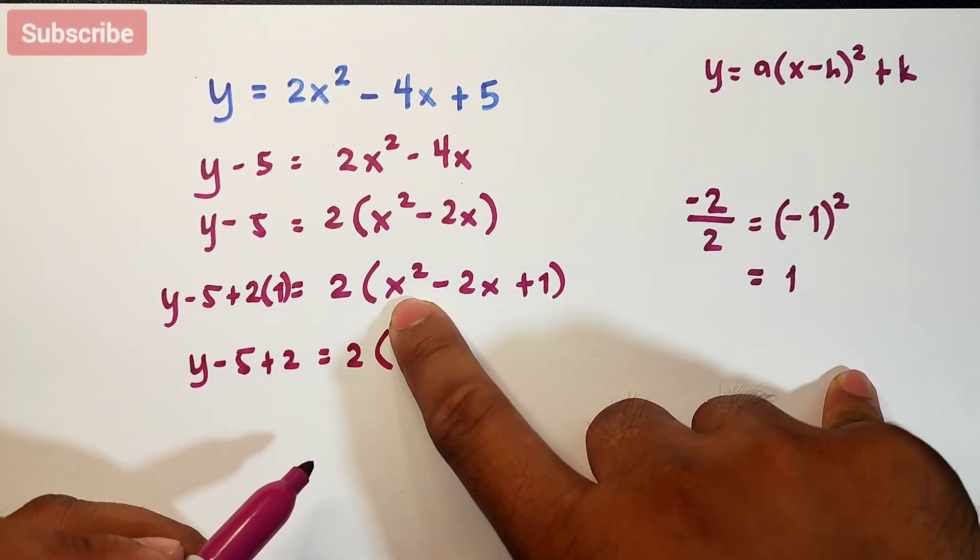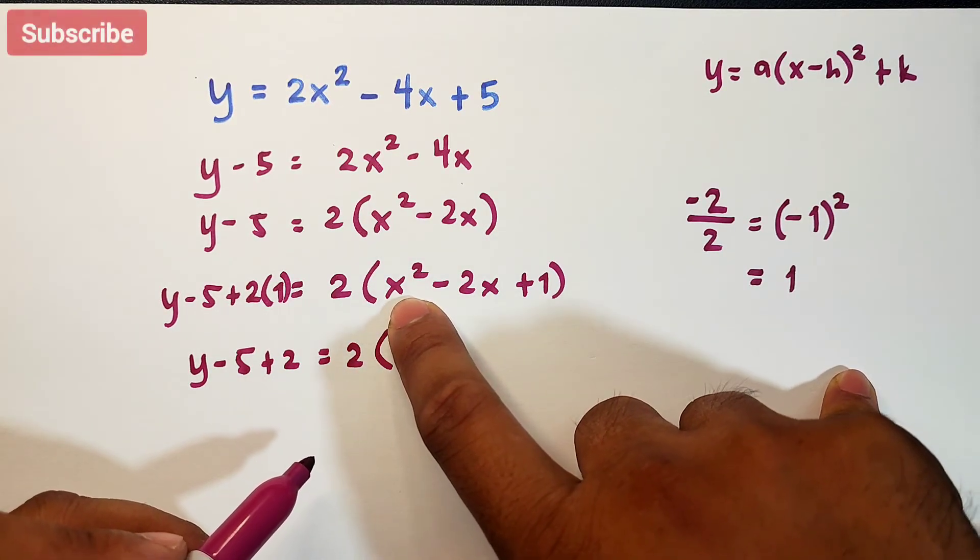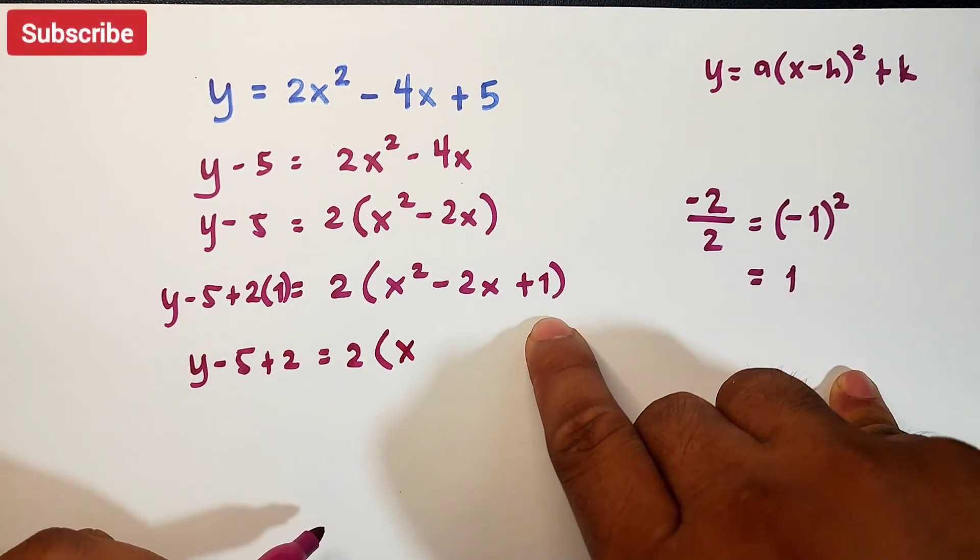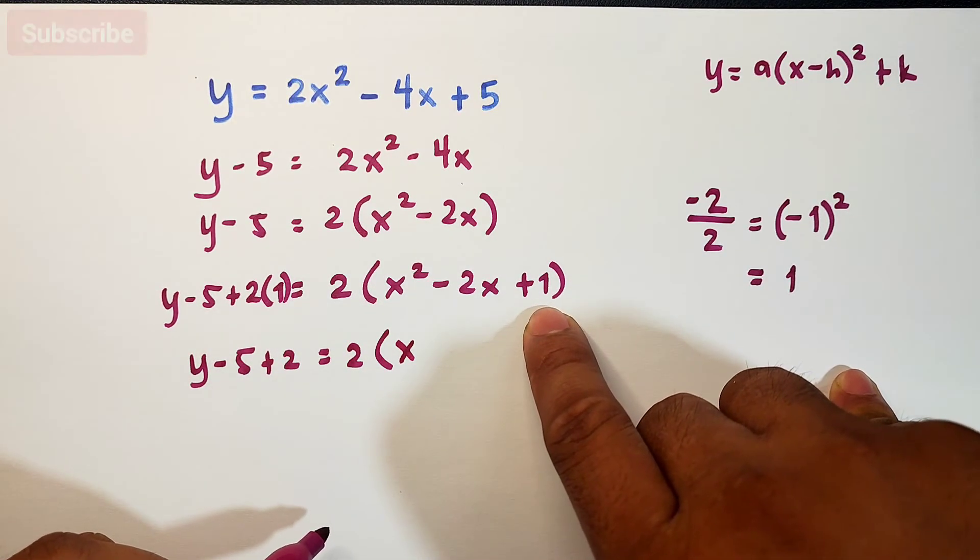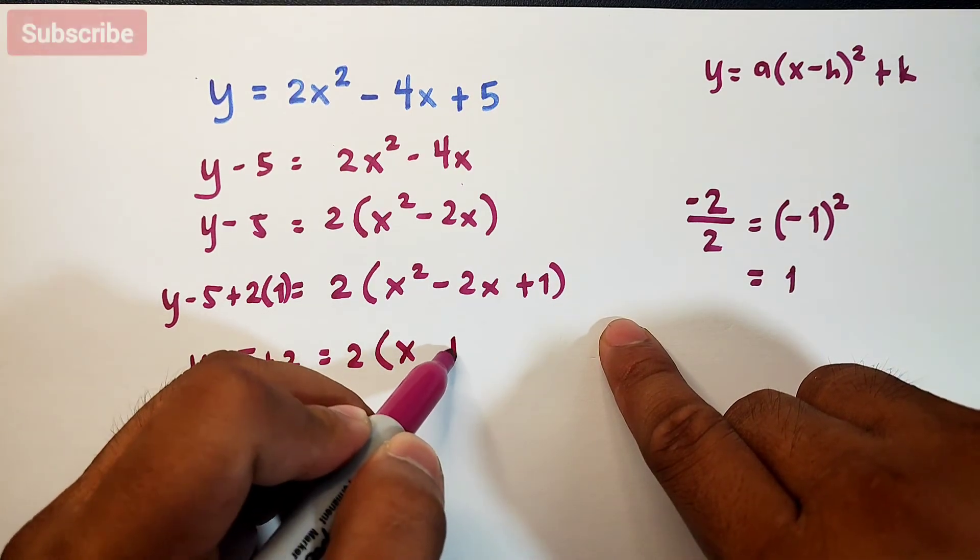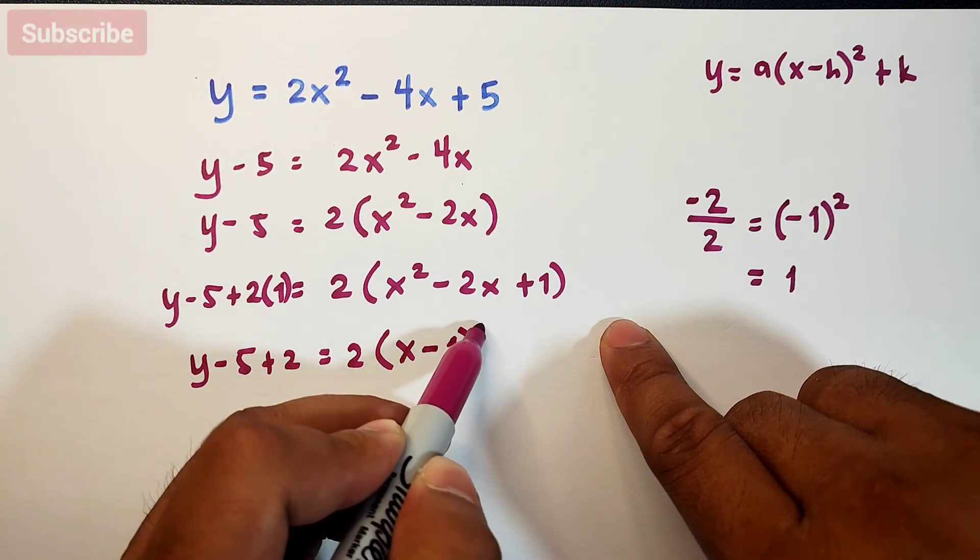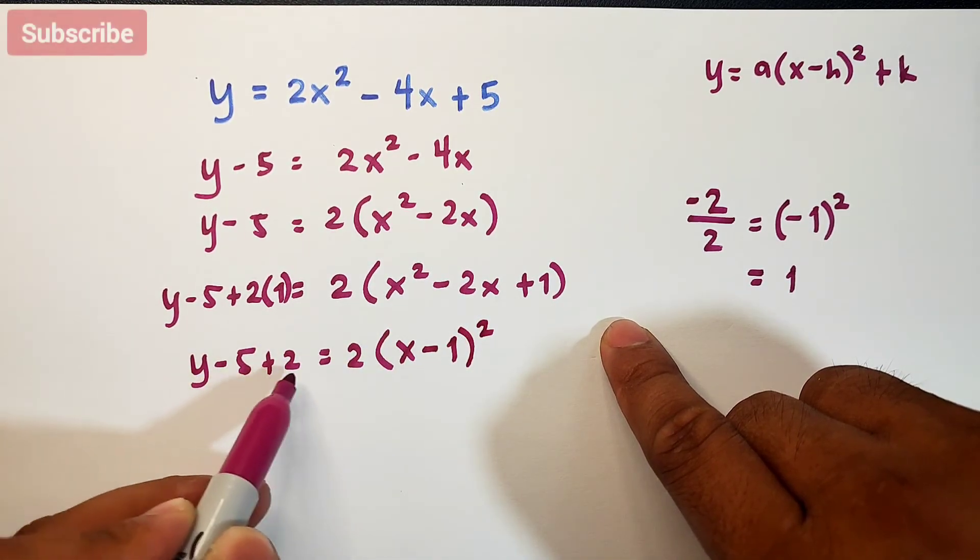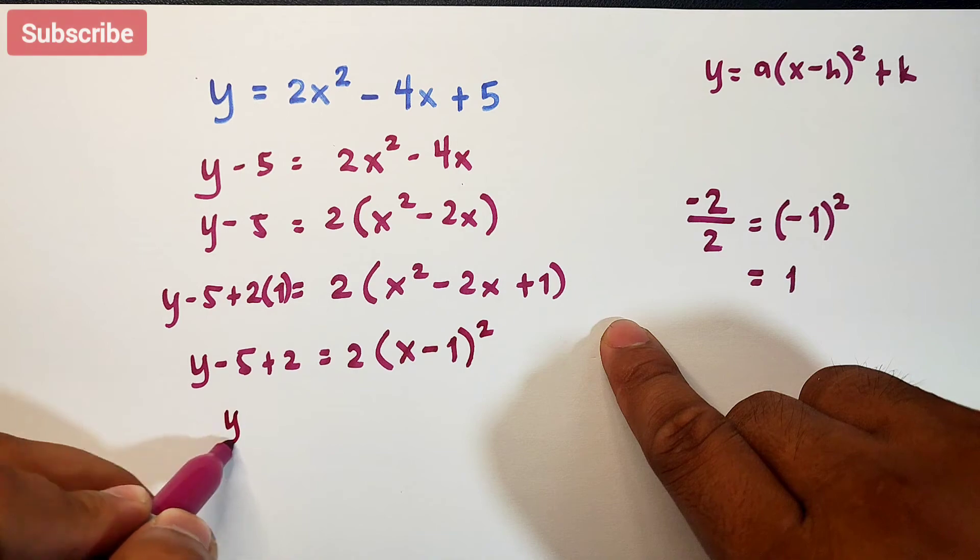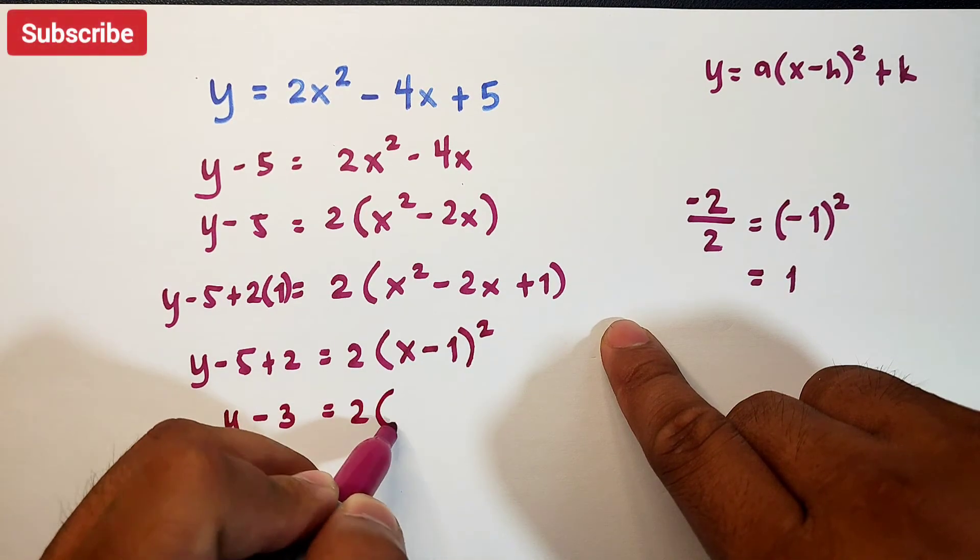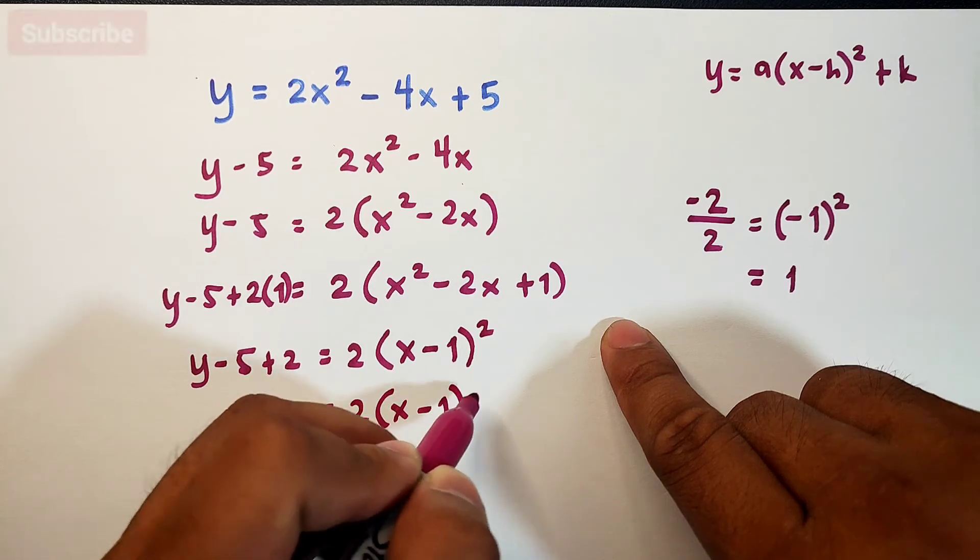We can make this a square of binomial. Get the square root of x squared which is x. The square root of 1 which is 1. The sign of the middle term is minus. Then square it. Simplify this. It becomes y minus 3 equals 2 times x minus 1 squared.